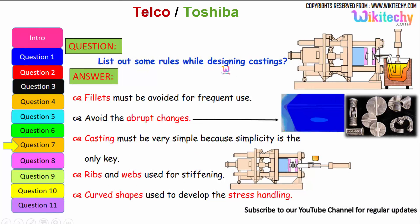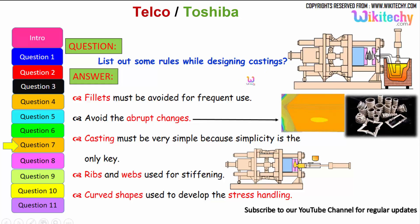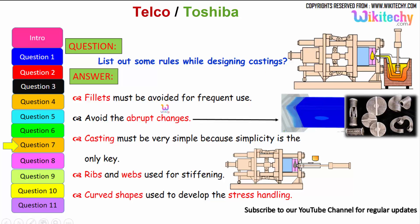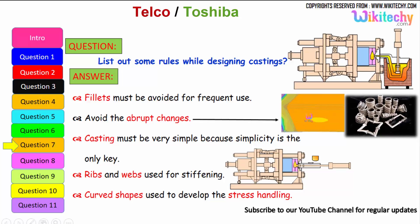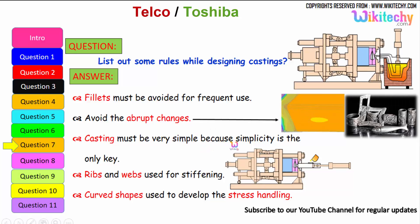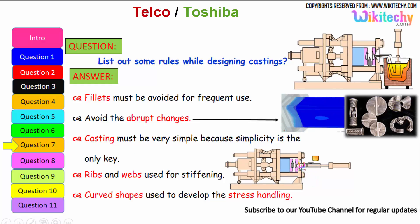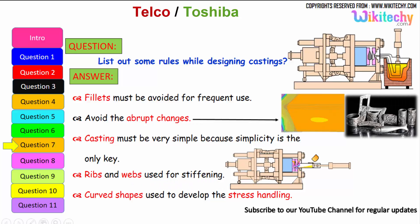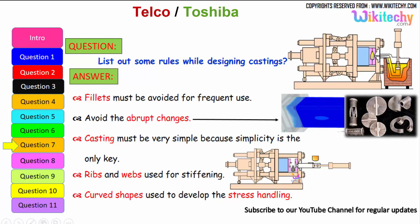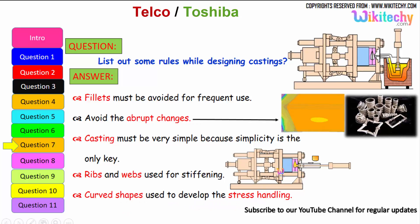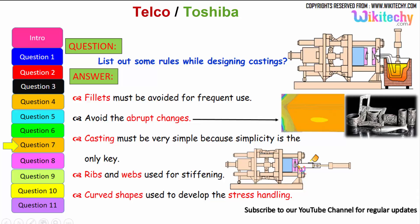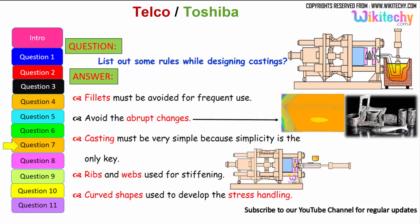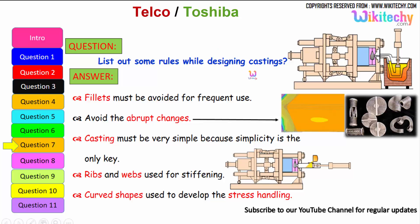Let us see some of the rules while designing castings. Fillets must be avoided for frequent use. Avoid abrupt changes in section. Casting must be very simple — simplicity is the key. Ribs and webs are used for stiffening. A curved shape should be used to help with stress handling. These are some of the rules which we have to follow for castings.